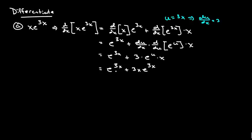A lot of times you'll see when they've got the same piece in here, you'll see authors go ahead and factor that guy out. So e to the 3x times the quantity (1 + 3x), just like that. So that's how we work part A.